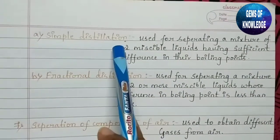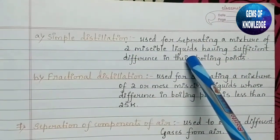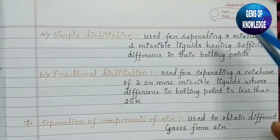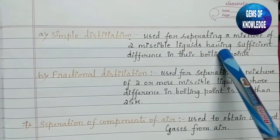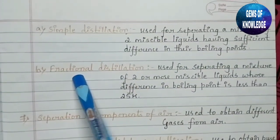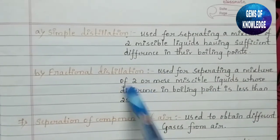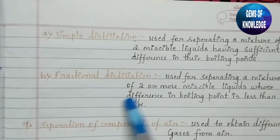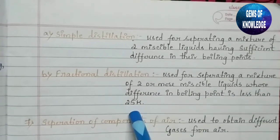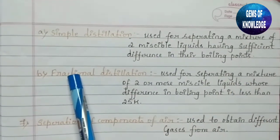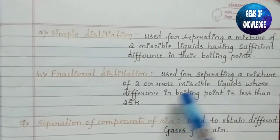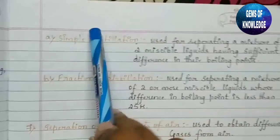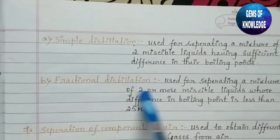Simple distillation is used for separating a mixture of two miscible liquids having a sufficient difference in their boiling point. Fractional distillation is used for separating a mixture of two or more miscible liquids whose difference in boiling point is less than 25 Kelvin. If the difference is less than 25 Kelvin we use fractional distillation; if there is a larger difference we use simple distillation.